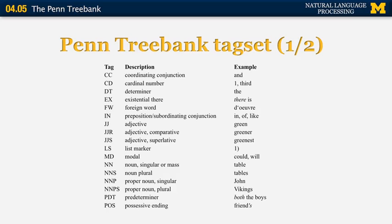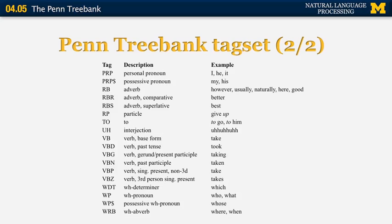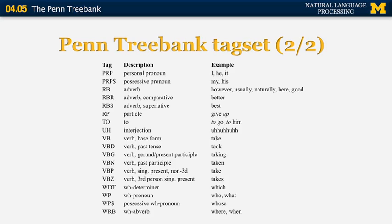The symbol IN is not just used for the preposition 'in' — it's used for any preposition or subordinating conjunction, except for the preposition 'to', which has its own tag, namely TO. The reason is that 'to' is also used a lot in infinitives and some other special constructions, making it significantly different from the rest of the prepositions.